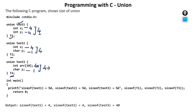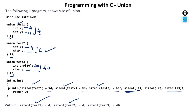Inside printf, we print sizeof(t1), sizeof(t2), and sizeof(t3). The sizeof operator gives the size of a data type or variable. T1 represents test1, so sizeof(t1) gives 4. T2 represents test2, so sizeof(t2) also gives 4. T3 represents test3 and the maximum size is 40, so sizeof(t3) gives 40. This confirms that a Union takes the size of the member which is maximum among all members.